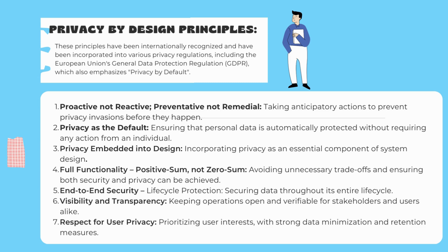Principle number five: end-to-end security, life cycle protection — securing data throughout its entire life cycle. Principle number six: visibility and transparency — keeping operations open and verifiable for stakeholders and users alike. Principle number seven: respect for user privacy — prioritizing users' interests with strong data minimization and retention measures.